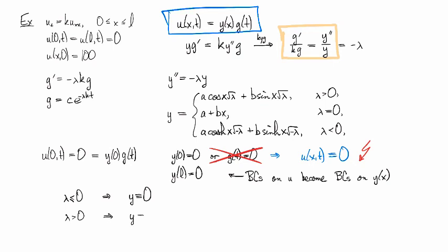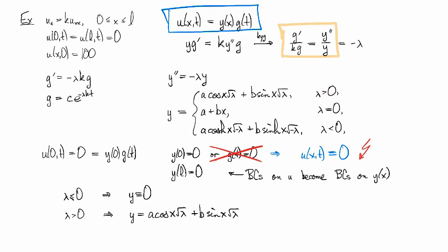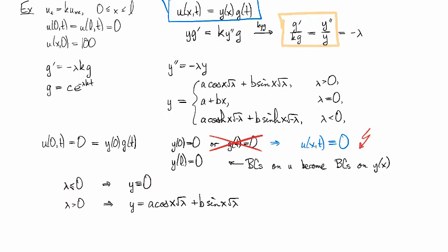And if lambda is positive, then we are left with something of the form A cosine x root lambda plus B sine x root lambda. And carrying this along, we find out that the boundary conditions force this cosine term to go to zero. And so we're just looking at B sine x lambda.